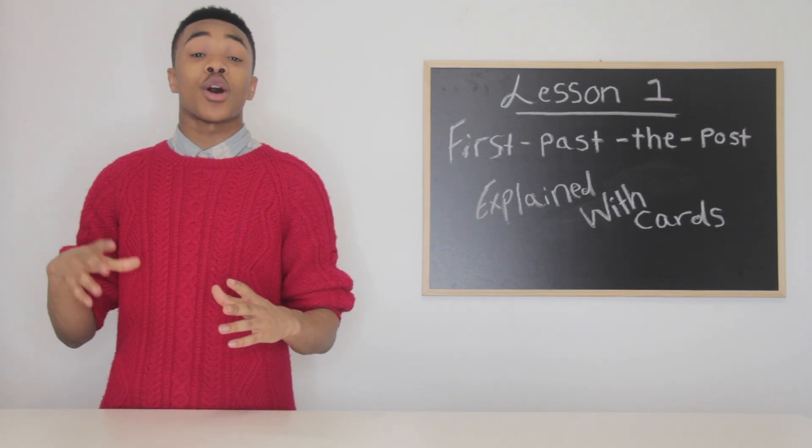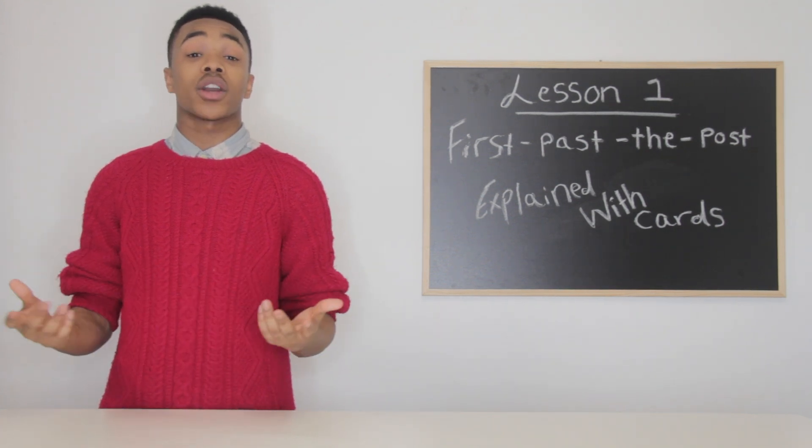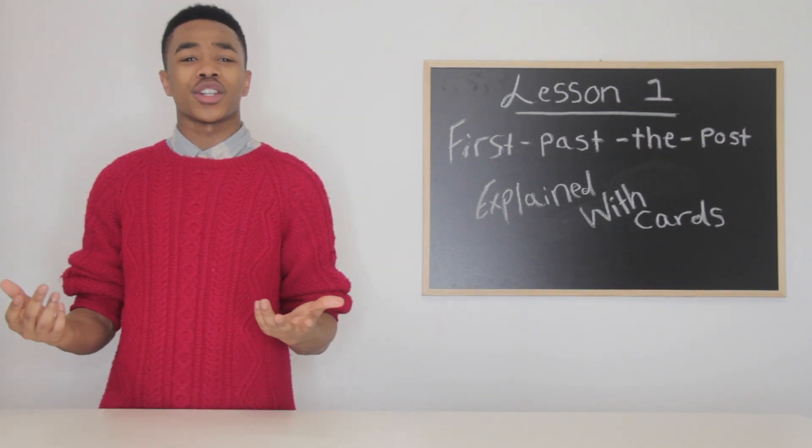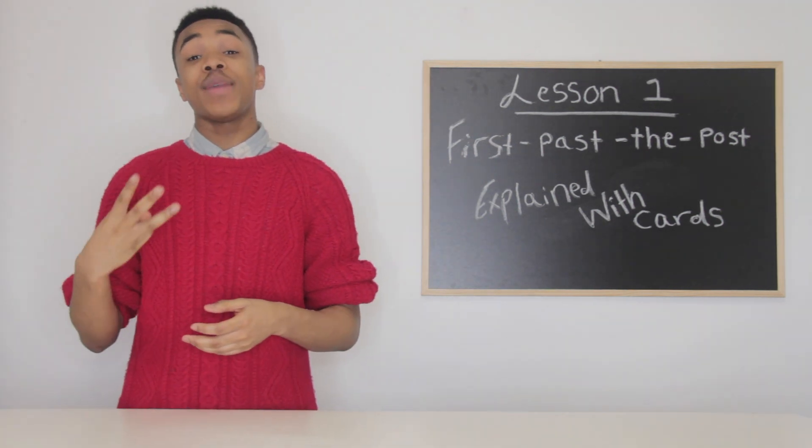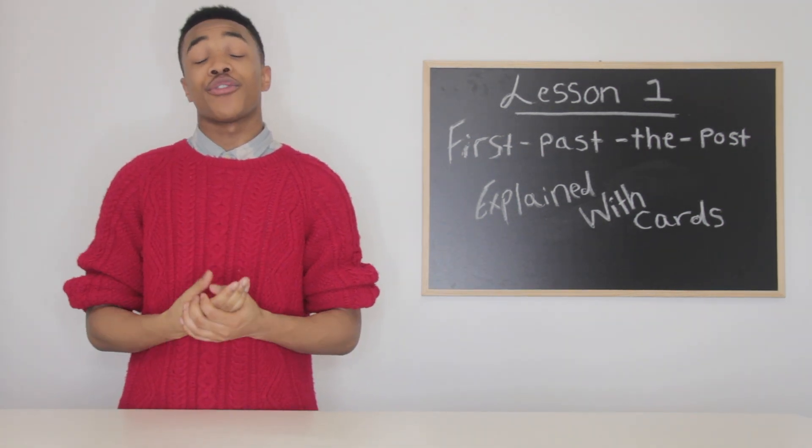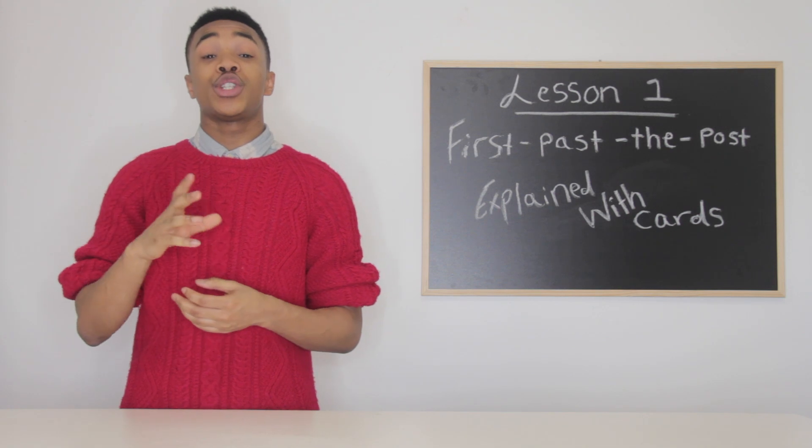So today we'll be explaining about the parliamentary voting system and how it works. How does a voting system work in the UK? So we have three main voting systems in the UK. The main one being the first past the post, which we use to elect...